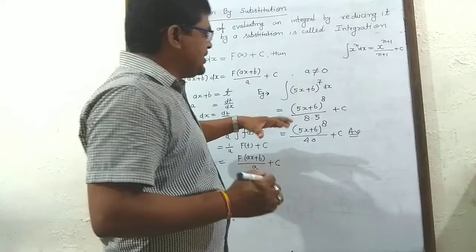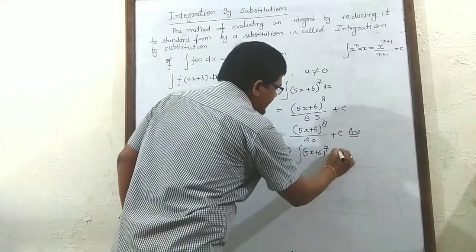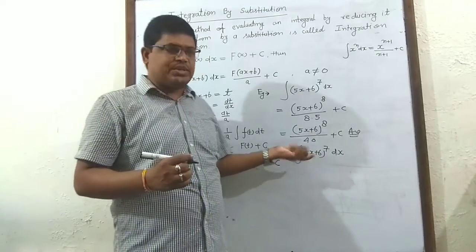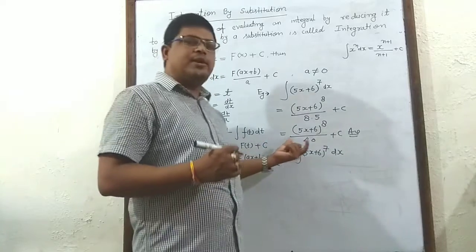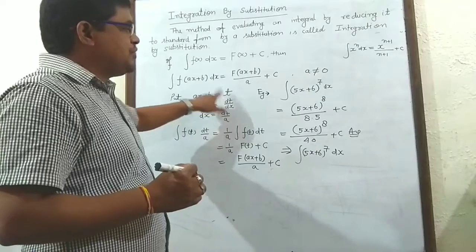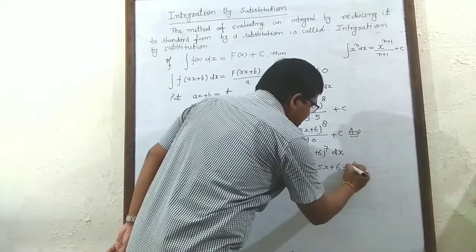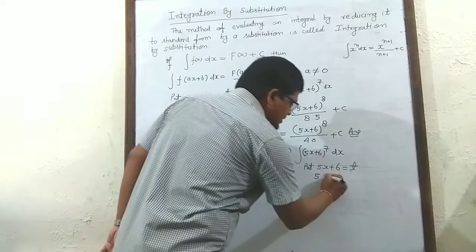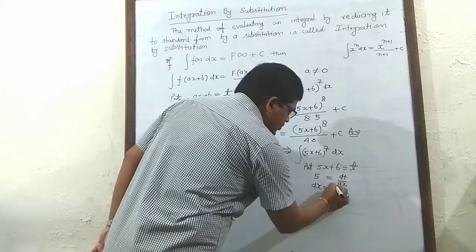Now let's integrate (5x + 6)^7 by the process method. We need a substitution that converts this to the standard integral form x^n. Put 5x + 6 equal to t. Differentiating with respect to x, we get 5 times the differentiation of x = 1, and differentiation of 6 = 0, so we get dt upon dx. Therefore, dx equals dt upon 5.